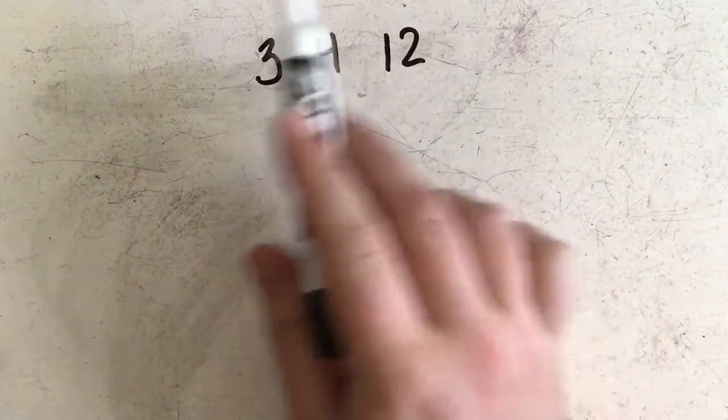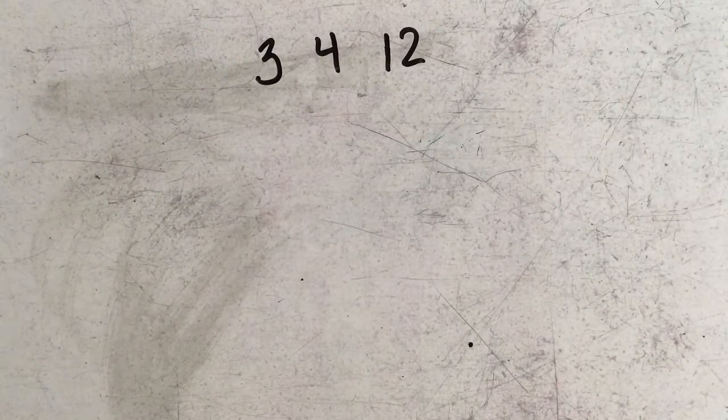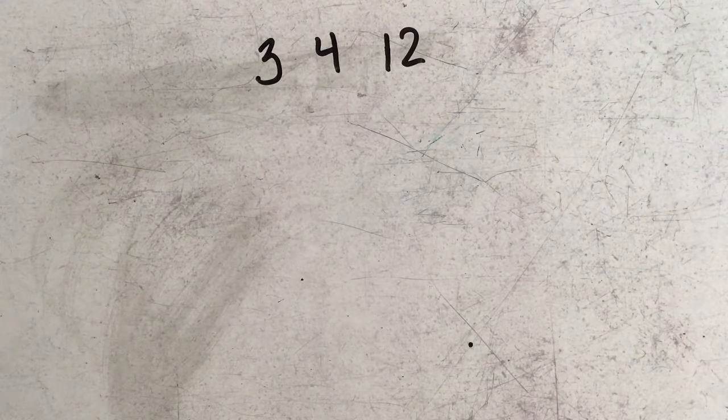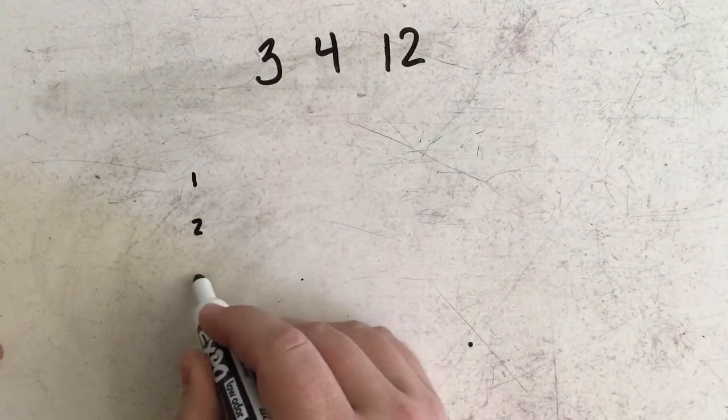So in this case I have three numbers here: 3, 4, and 12. These three numbers all share a relationship between them where they can be written into four different number sentences.